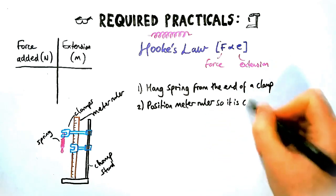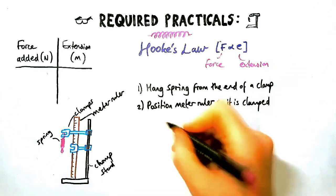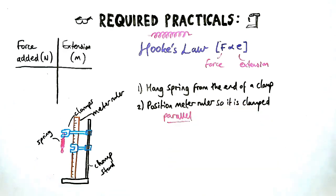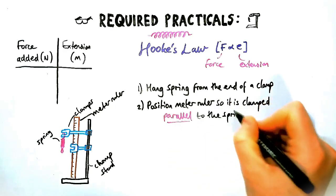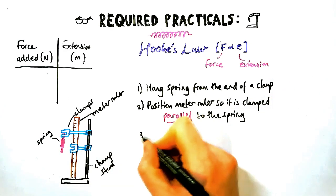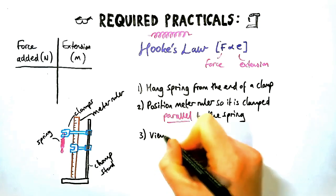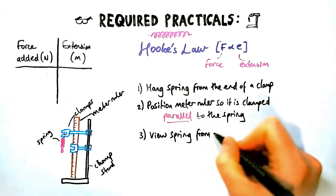The next one, and it's always helpful to have a diagram for this, is to position the meter ruler so that it's clamped parallel to the spring. So in line with the spring in the same direction. You could do that with a protractor or set square, but it needs to be parallel.